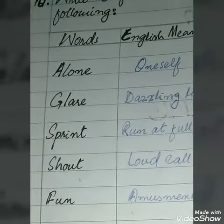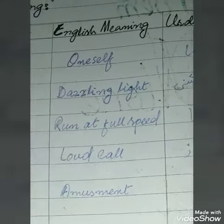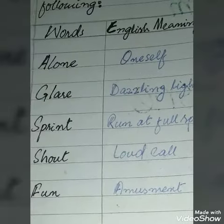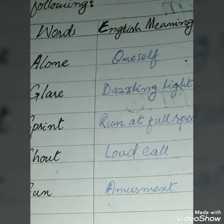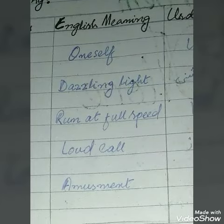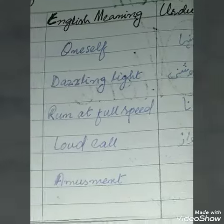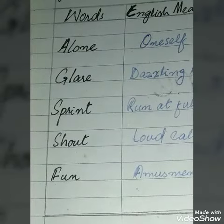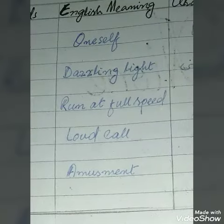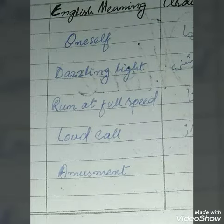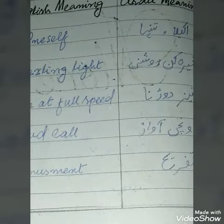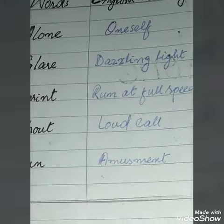Your first word is 'alone'. English meaning: one who is solitary. Urdu meaning: akela tanha. Next word: 'glare'. English meaning: dazzling light. Urdu meaning: kharakun roshni. Next word: 'sprint'. English meaning: run at full speed. Urdu meaning: tez dharnak.